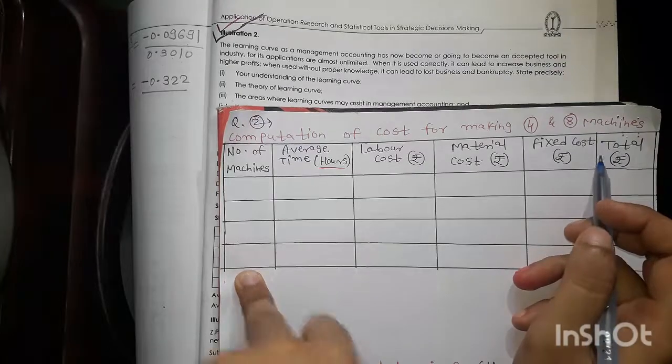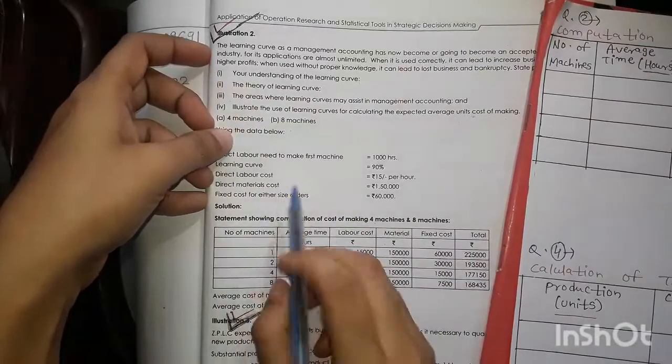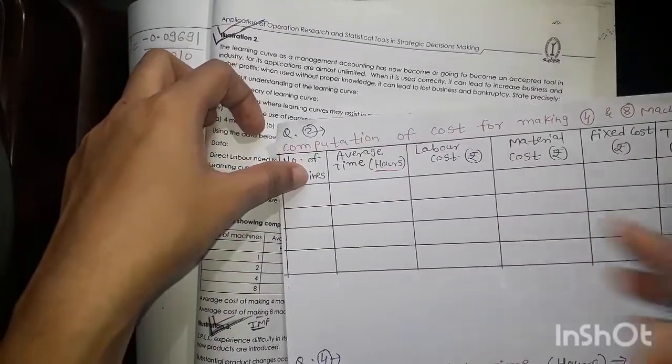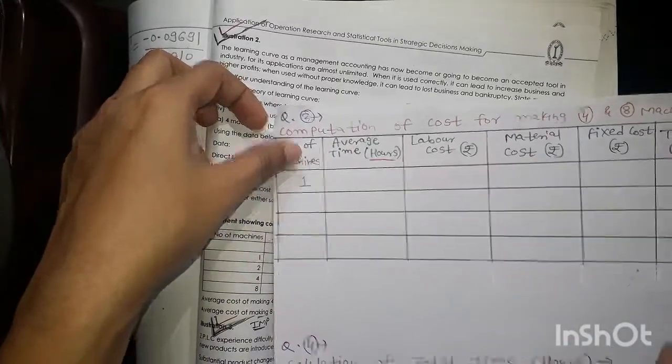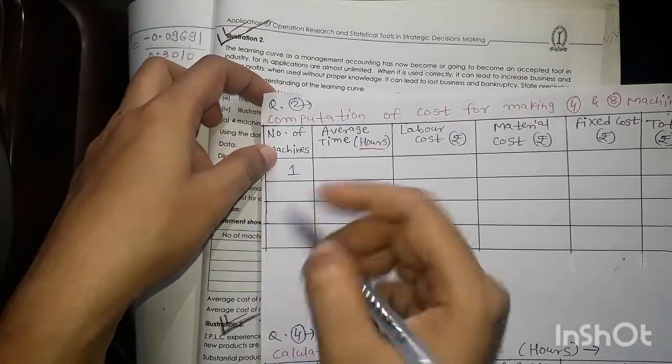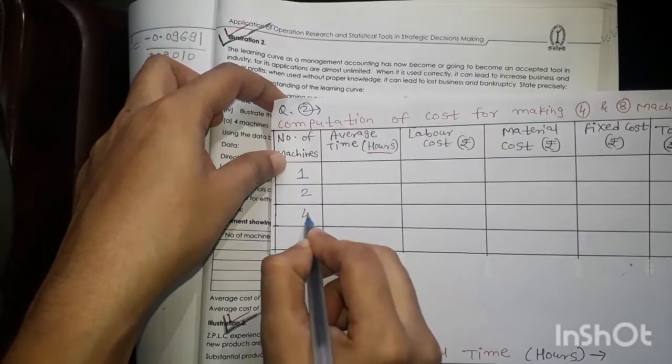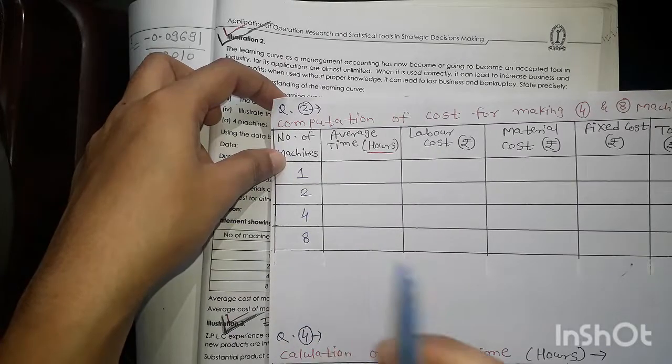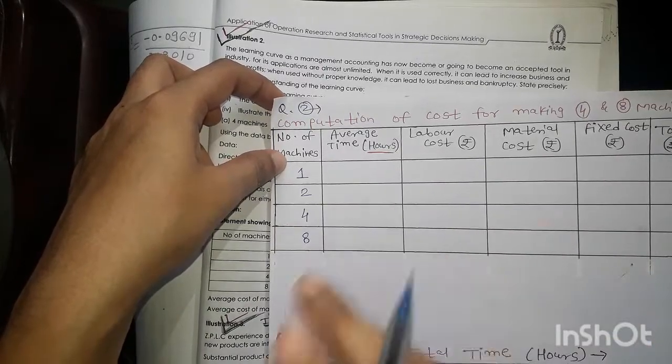First of all, number of machines. What is given to make a first machine? First machine, to produce it, how much time will it take? So, 1. In learning curve, what happens? As we double output, the time will keep reducing. So 1 doubled is 2. 2 doubled is 4. And 4 doubled is 8. And we require answer for 4 and 8. That's why we are using table method. Because output is exact double of the earlier output.